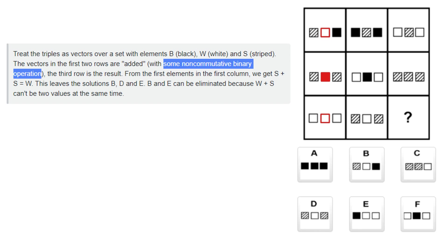The non-commutative binary operation part means that the order of how we add the squares matters for what result we get. For example, white plus black does not equal black plus white. We can see this is true if we look at the left squares of the second column: black plus white equals striped, while in the middle squares of the first column, white plus black equals white. So black plus white does not equal white plus black.